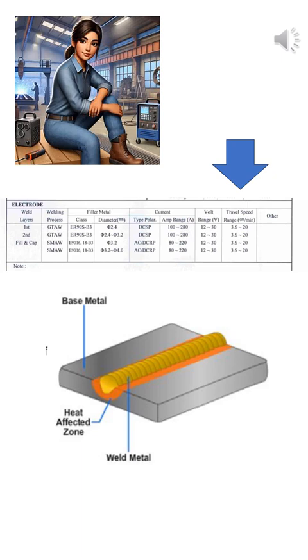As we said before, the HAZ is where things get unpredictable. Closest to the weld, you get grain growth. A little farther out, maybe some grain refinement. Go out a bit more, and you might see annealing, where the metal softens up.